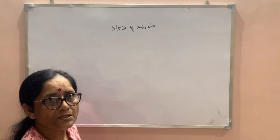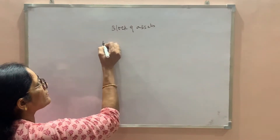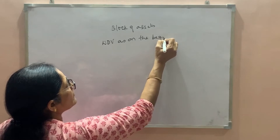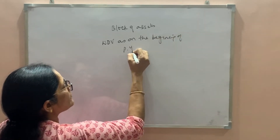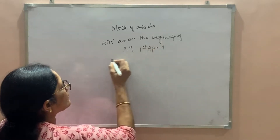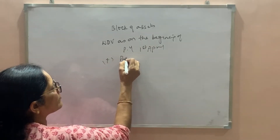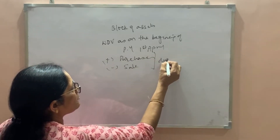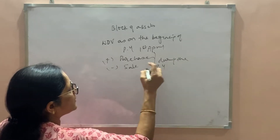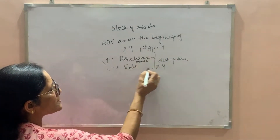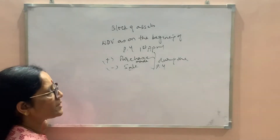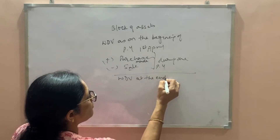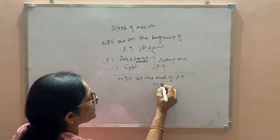For the computation of depreciation, we start with WDV as on the beginning of the previous year, that is 1st of April. To this we add purchases and deduct sales during the previous year. The resultant figure is the WDV at the end of the previous year, that is 31st March.